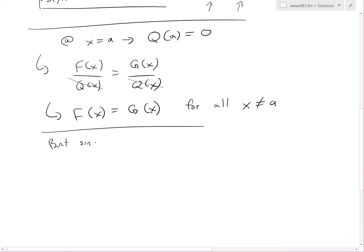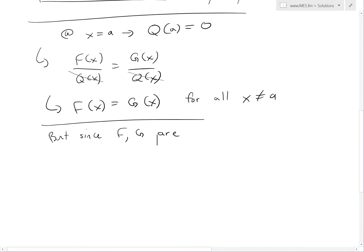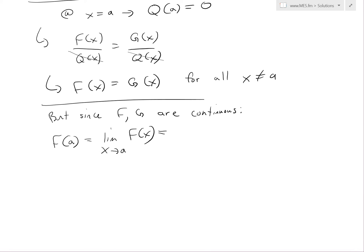So we know this, but since F and G are continuous, then we can basically write this continuity formula right here. Then we get f(a) is equal to limit as x approaches a of F(x). And now this equals to, because we know that F(x) equals to G(x) for all values where x is not equal to a, so getting closer and closer to a is still going to hold true. So limit as x approaches a of G(x). The limits are equal, but they're both continuous. So this equals to G(a), so basically, F(a) equals to G(a).